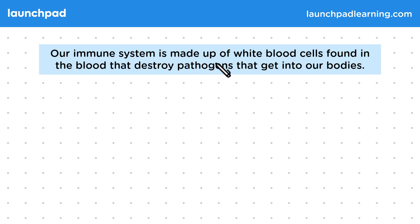Our immune system is made up of white blood cells found in the blood that destroy pathogens that get into our bodies.